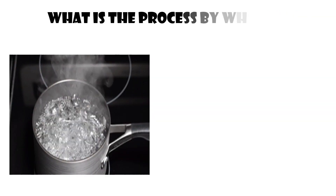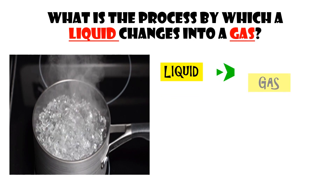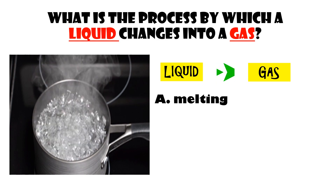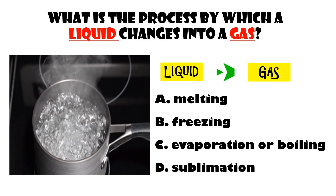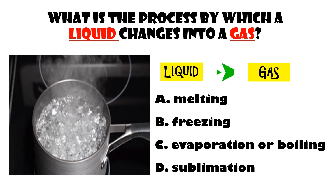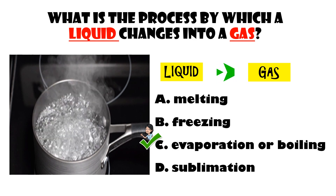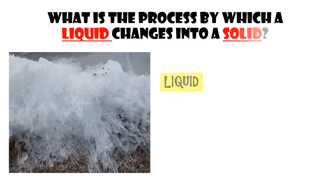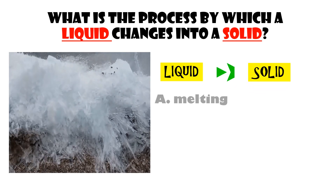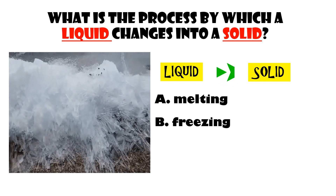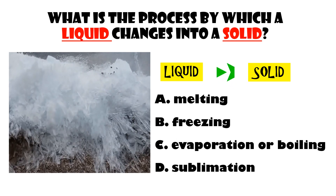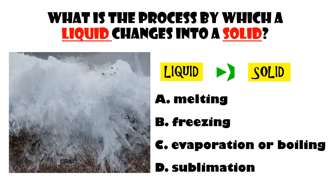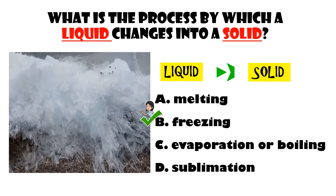What is the process by which a liquid changes into a gas? A. Melting. B. Freezing. C. Evaporation or boiling. D. Sublimation. The correct answer is C — evaporation or boiling. Good job! What is the process by which a liquid changes into a solid? A. Melting. B. Freezing. C. Evaporation or boiling. D. Sublimation. The correct answer is B — freezing. Great job!